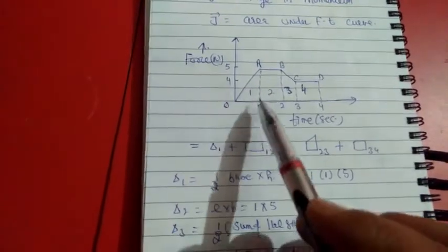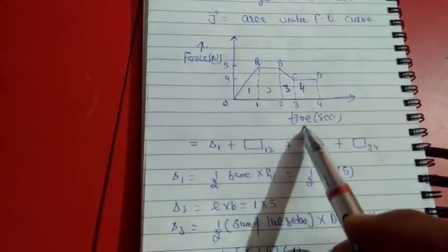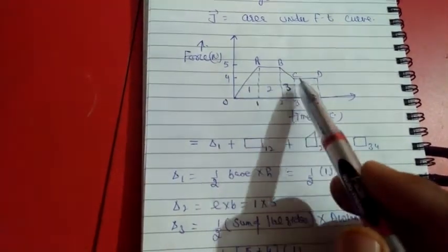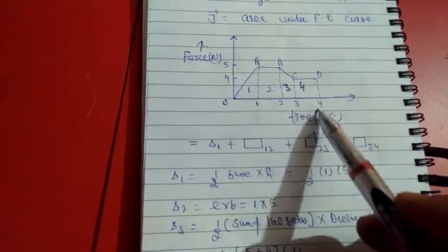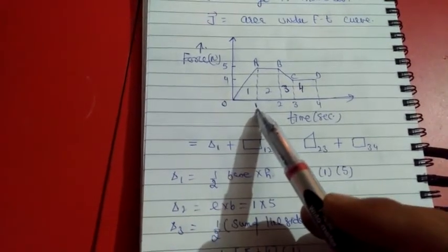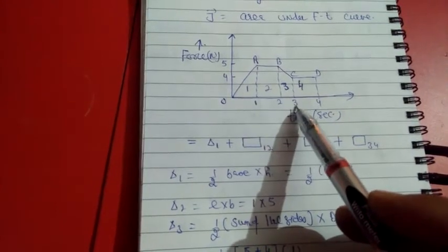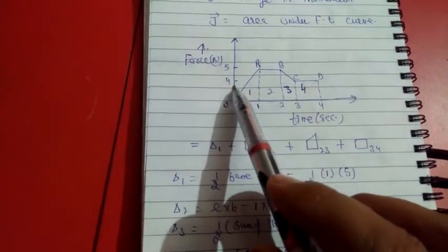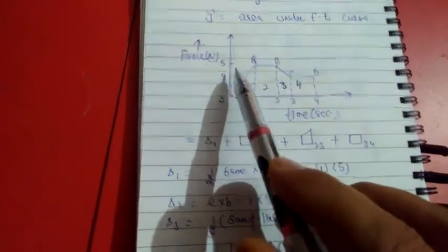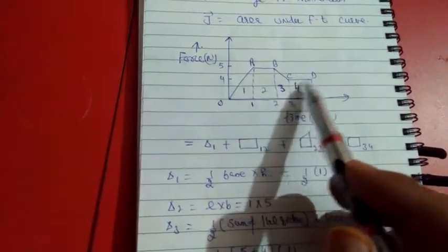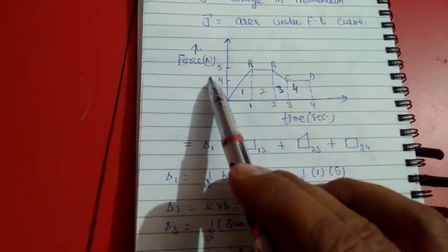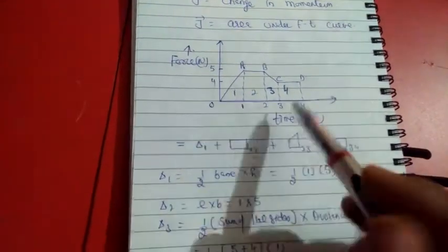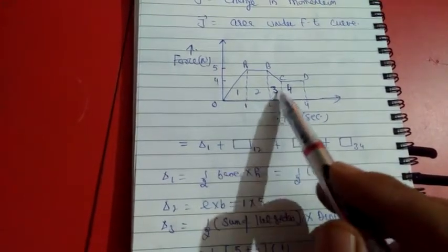We can discuss one problem. In this problem, a force-time graph is given and the particle's motion is from O to A, A to B, B to C, and C to D. On the time axis: at A it is 1 second, at B it is 2, at C it is 3, and at D it is 4. The force values: for CD it is 4 N and for AB it is 5 N. We have to find the impulse during this path, where force changes continuously with time. We can divide the whole figure into 4 components.